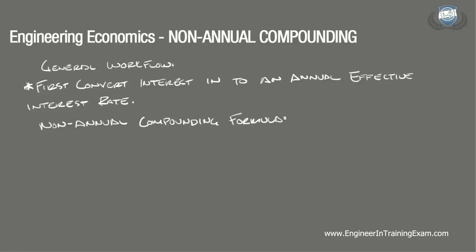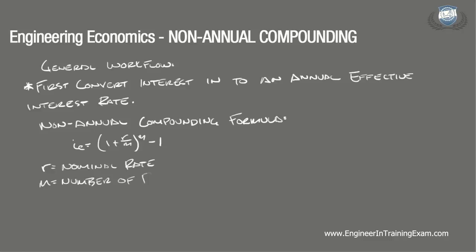The non-annual compounding formula is: I is equal to (1 plus R divided by M) raised to the M, minus 1, where R is the nominal interest rate and M is the number of compound periods per year.